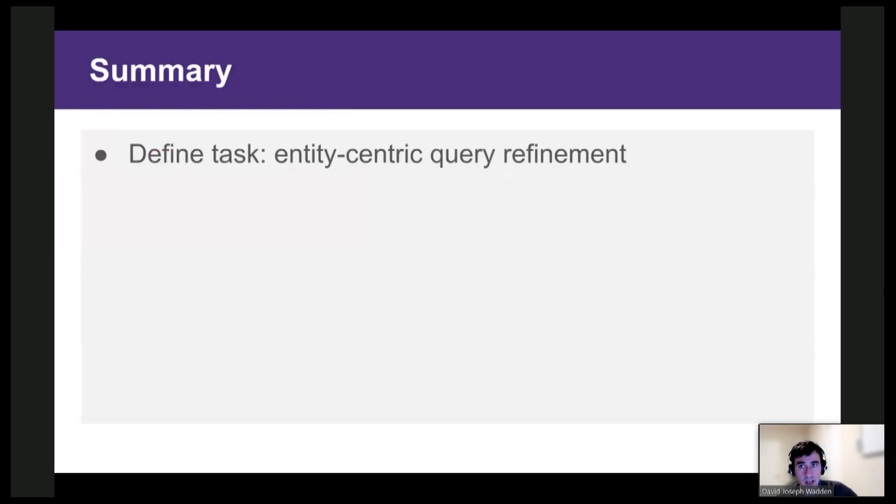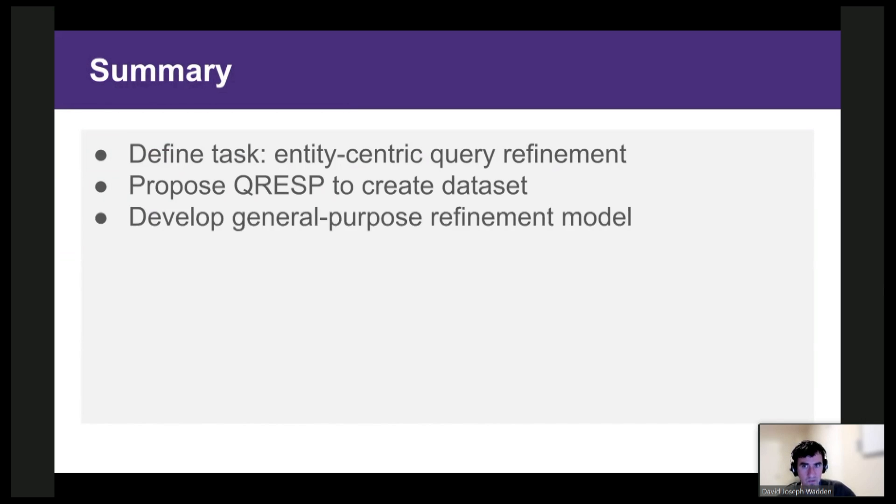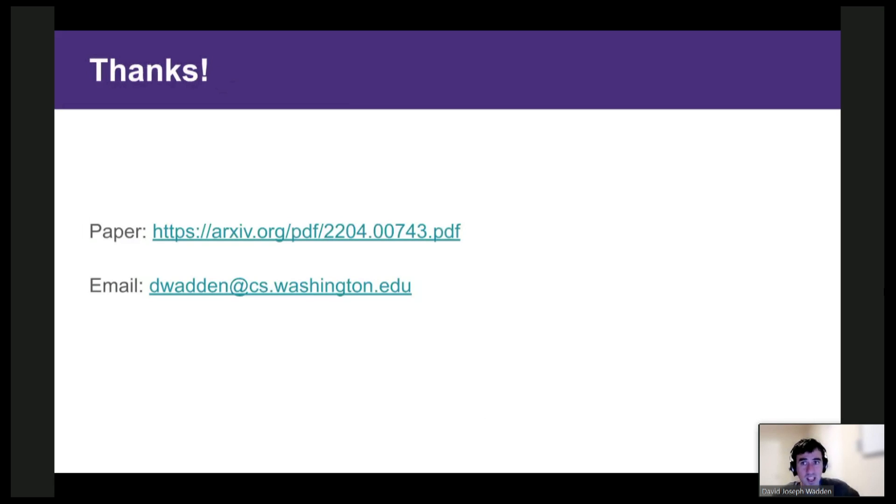So to summarize, we defined the entity-centric query refinement task. We proposed QRESP to create task demonstrations without collecting any human annotations. And we developed a general-purpose query refinement model. We think we've made some good progress, but there's a lot of interesting open challenges here. For instance, improving the consistency of our models under domain shift. So we have some ideas for how to do this, and I'm happy to chat offline. So with that, thank you all for listening, and I'm happy to take questions.